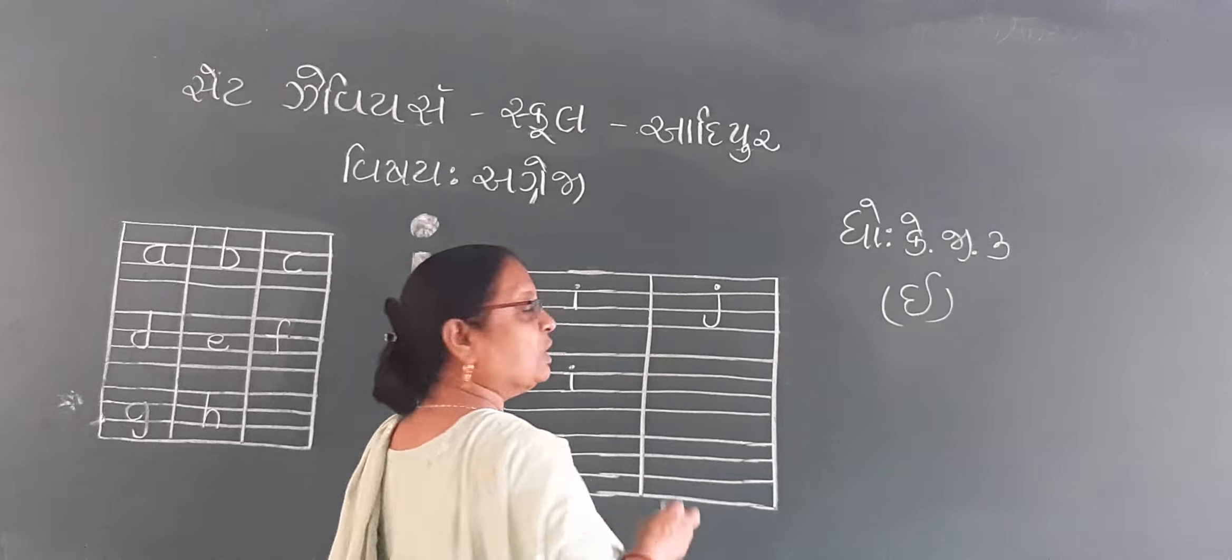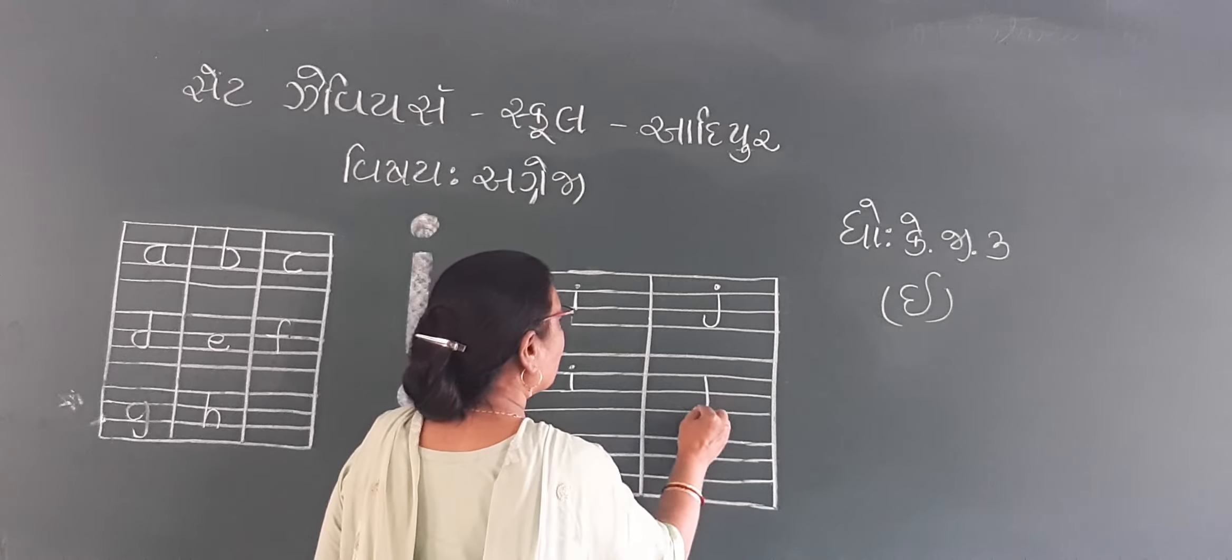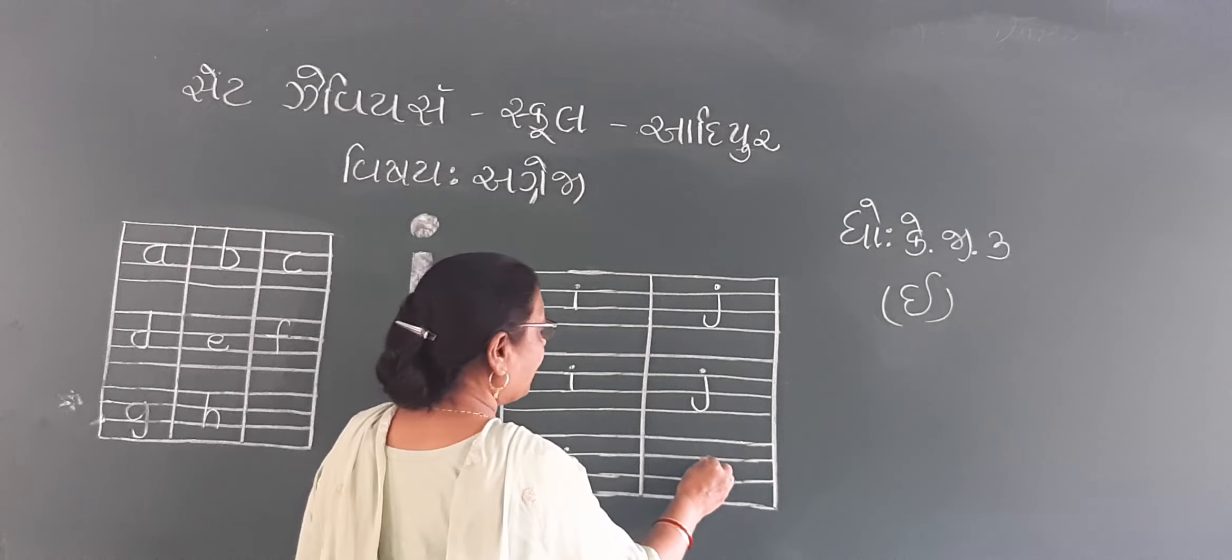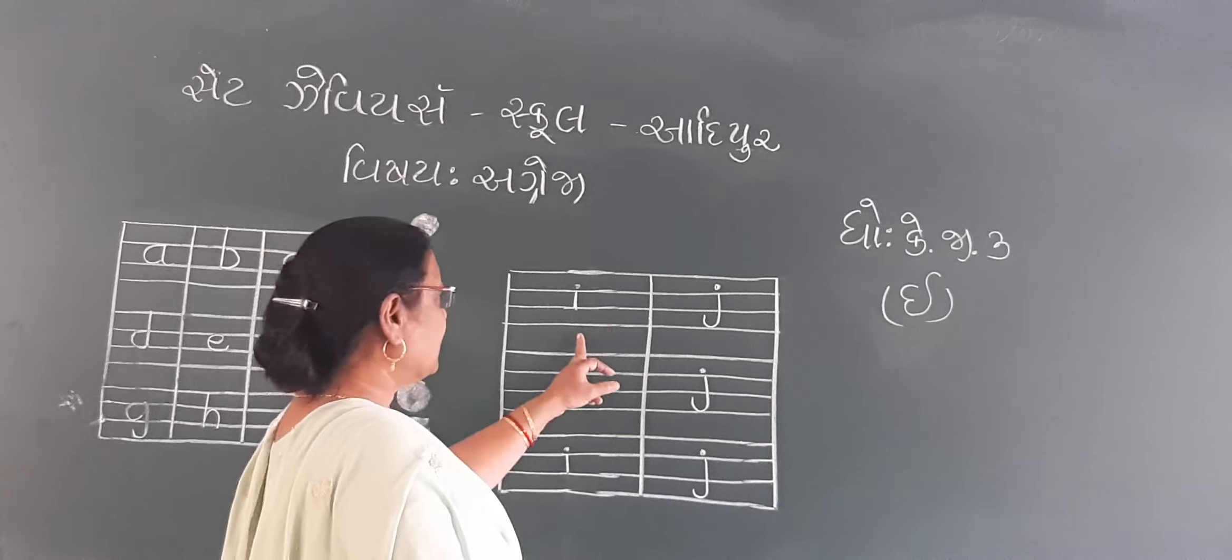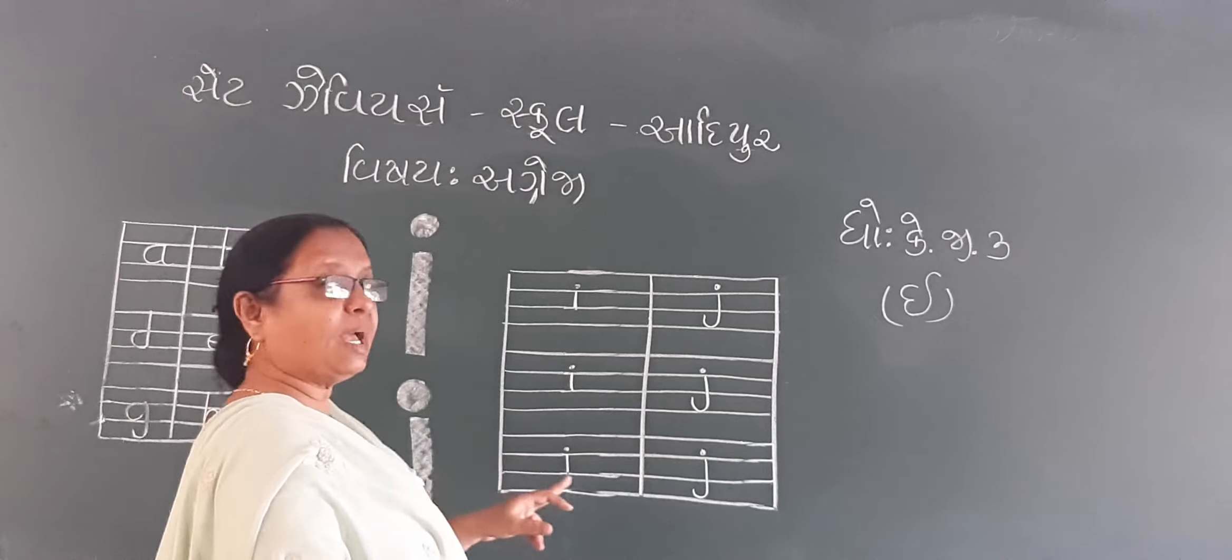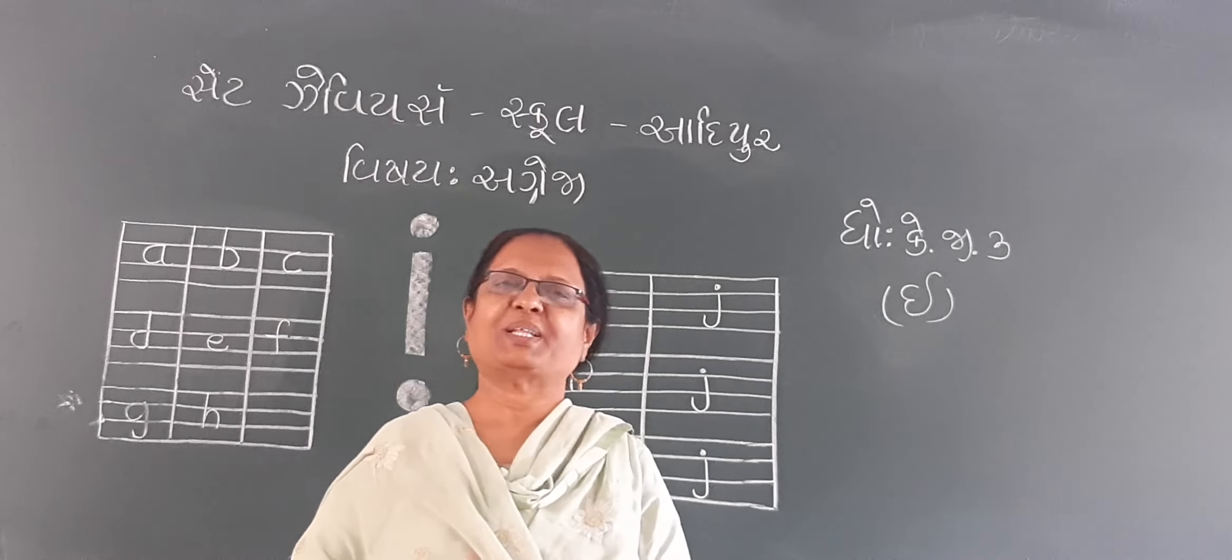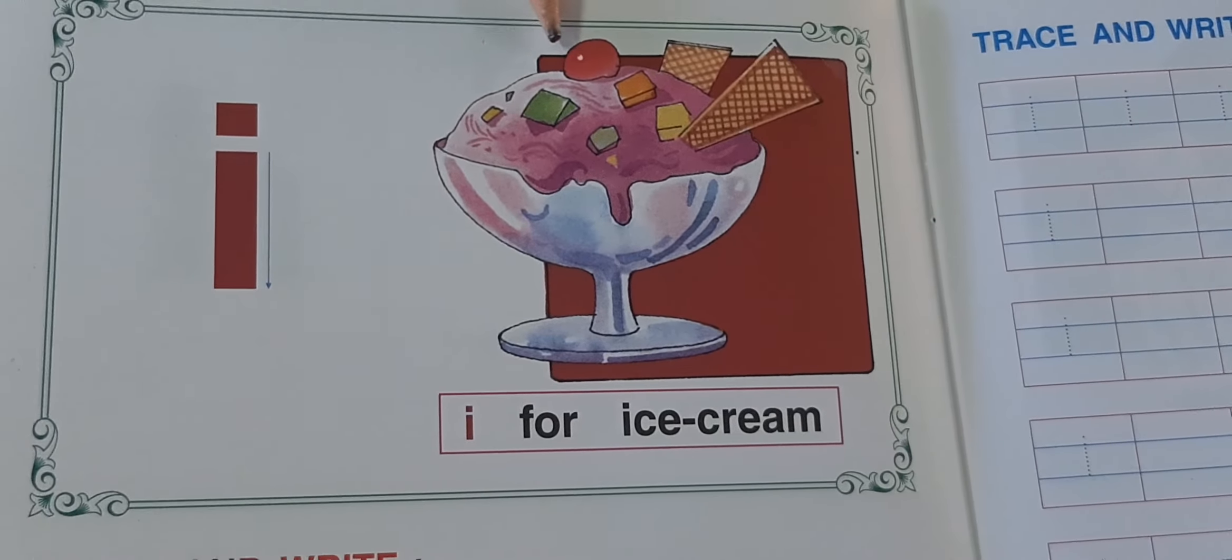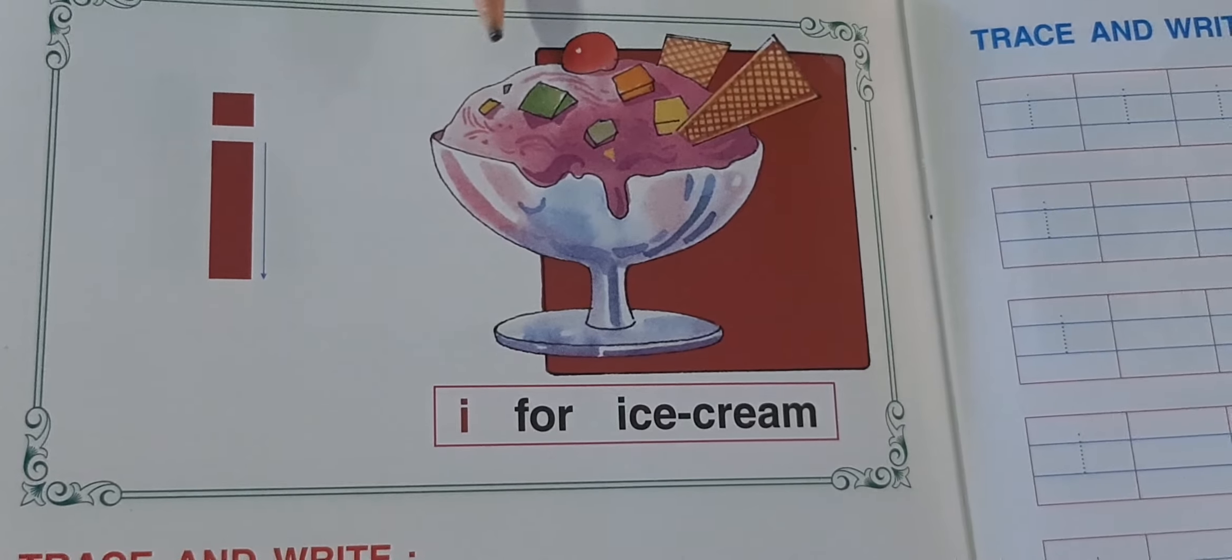I bought ice cream. J for joker. J for joker. What is the answer? J. J for joker. I for ice cream and J for joker. How do you say this? J for joker. I for ice cream. I for ice cream. I for ice cream.